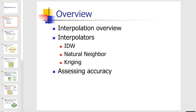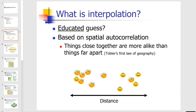Interpolation is pretty much an educated guess. You know values at certain locations, and you are asked to predict the values of locations where no measurements have been taken. Because we know the measurements at known points, we can use those to find an estimated value at a particular location.